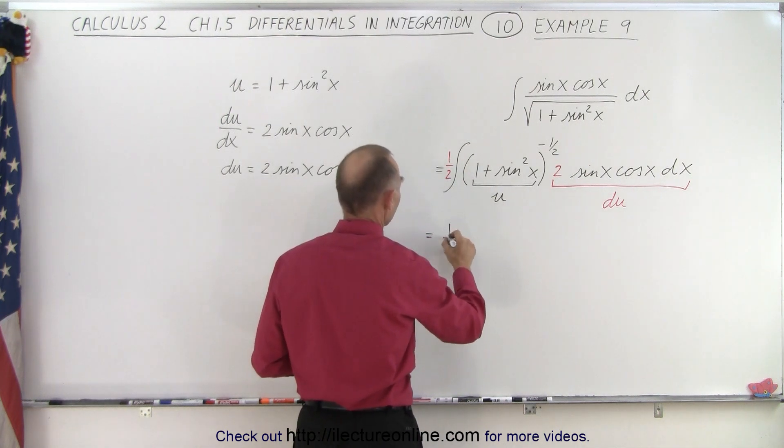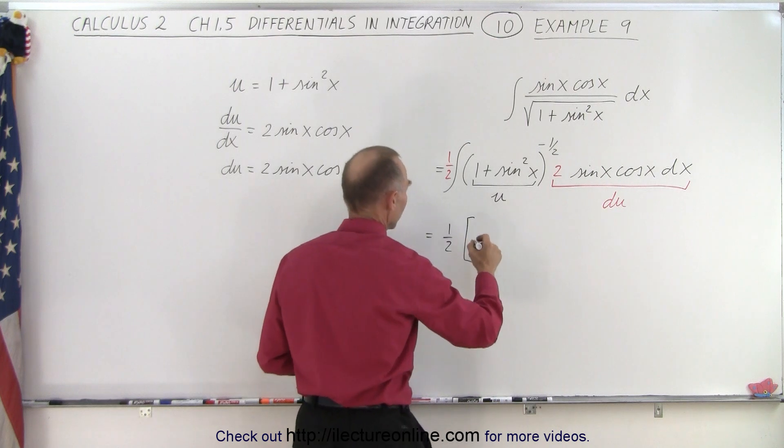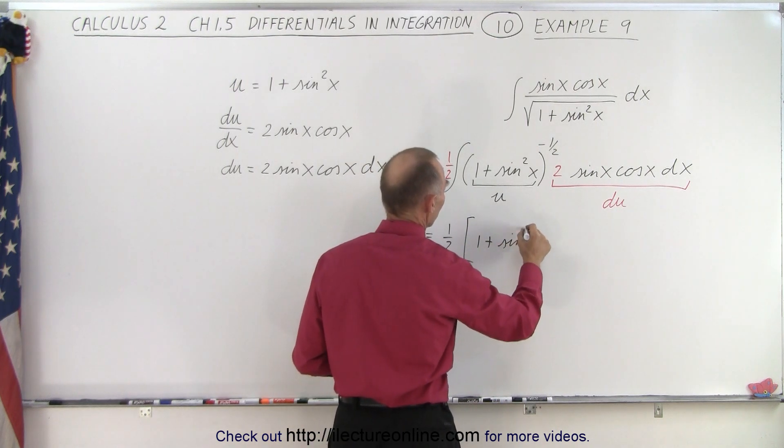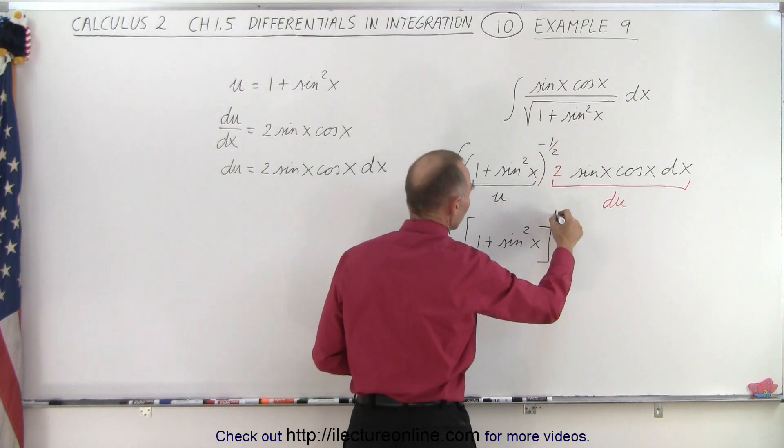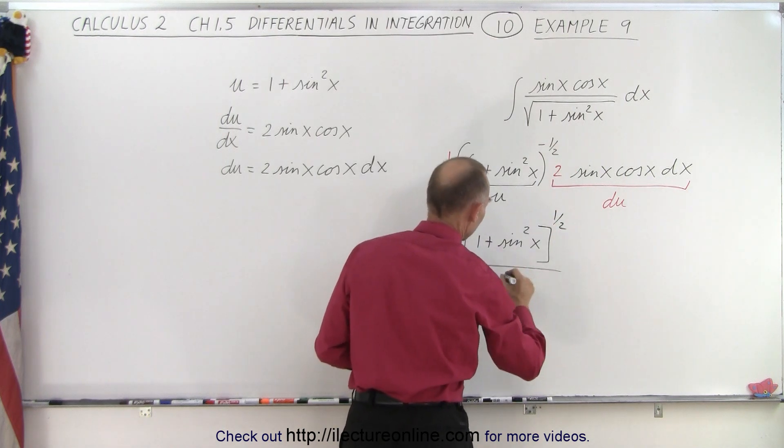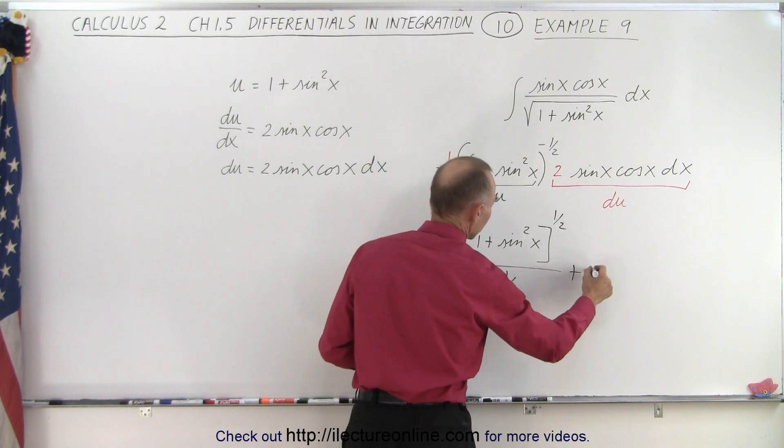So that becomes equal to 1 half times the quantity 1 plus the sine square of x raised to the exponent plus 1, which is 1 half power, divided by the new exponent plus a constant of integration.